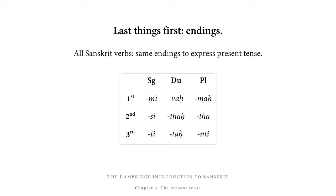On the left you can see first, second, and third — those refer to the persons. The first person refers to the speaker, so 'I' or 'we.' The second person is for the one who is directly addressed — 'you.' And the third person is for anyone or anything that's being talked about, so 'he,' 'she,' 'it,' 'they,' and so on.